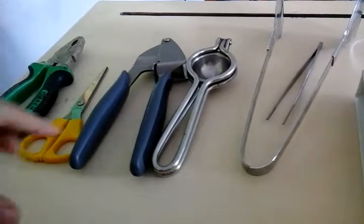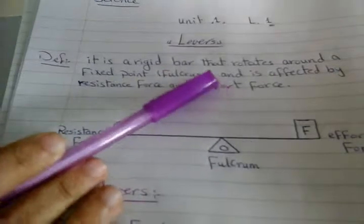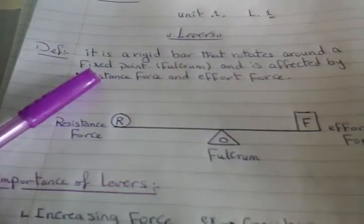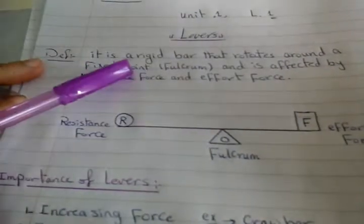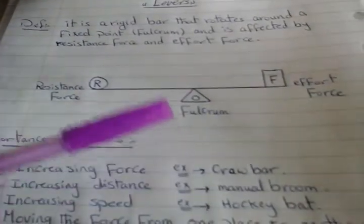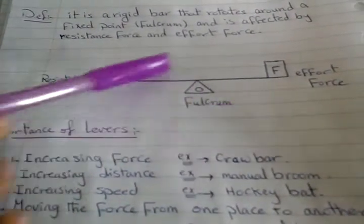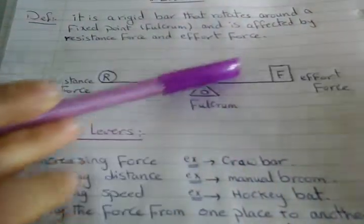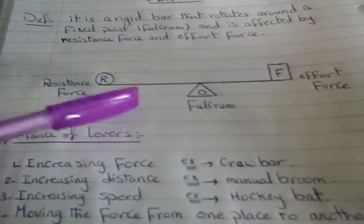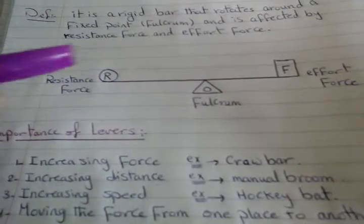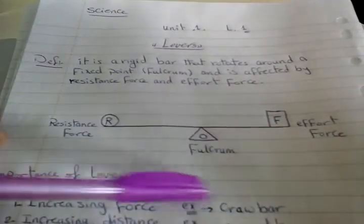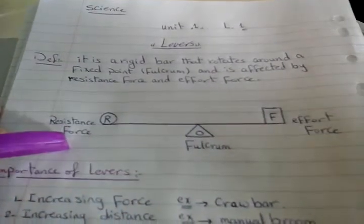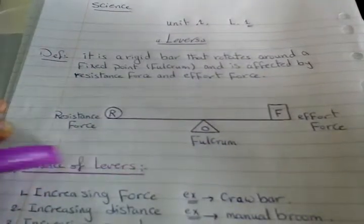Let's talk about the definition of levers. A lever is a rigid bar that rotates around a fixed point called the fulcrum, and is affected by two forces: resistance force and effort force. This is a simple figure for levers — this is the fulcrum, symbol O; this is effort force, symbol F; and resistance force, symbol R. This is the rigid bar.